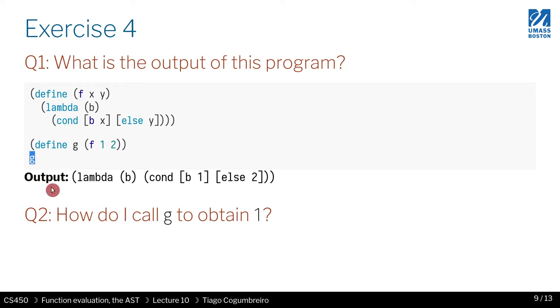I hope you pause the video. The only way to obtain this one is we have to call g and pass something that is true. In this case, anything that is not false, because this is racket. We pass, we call it with true, and it should return one.